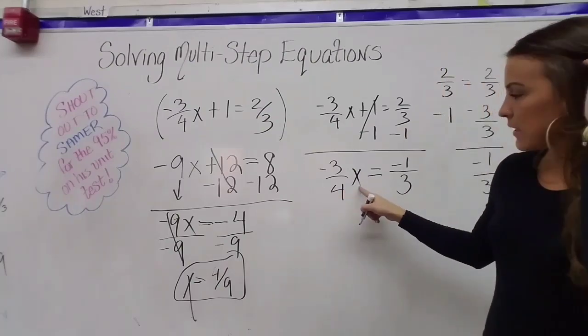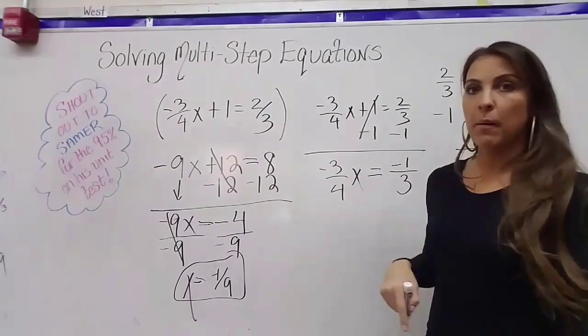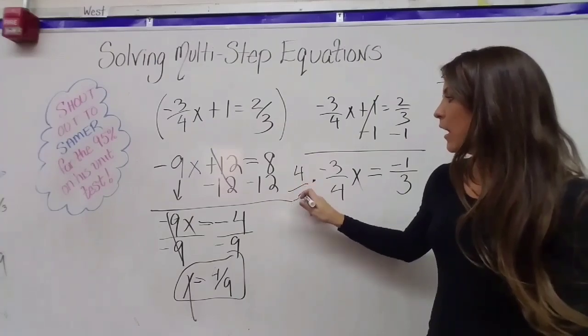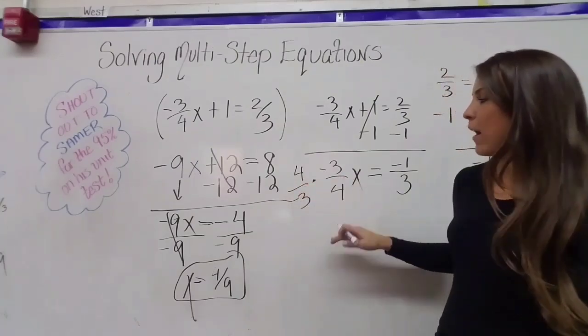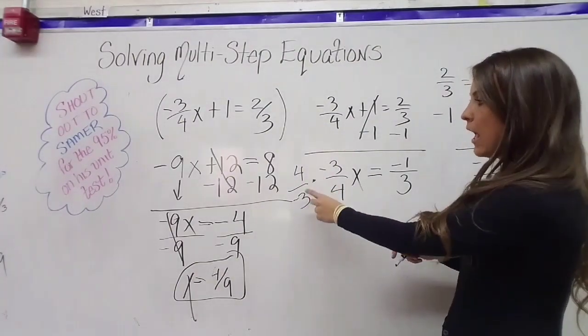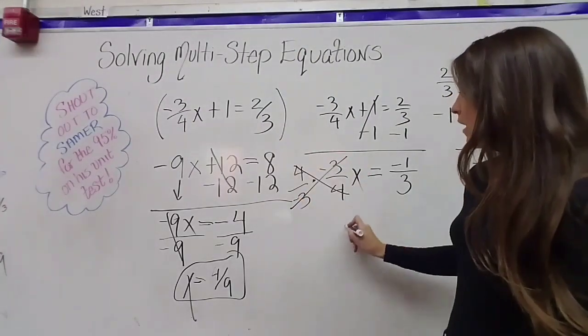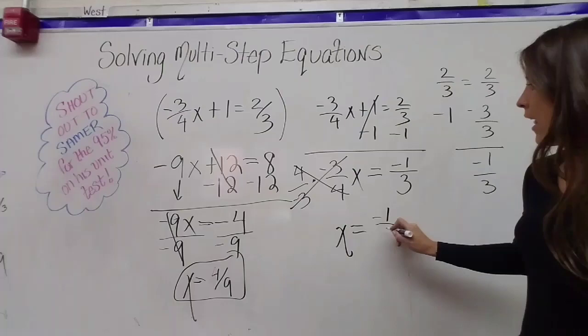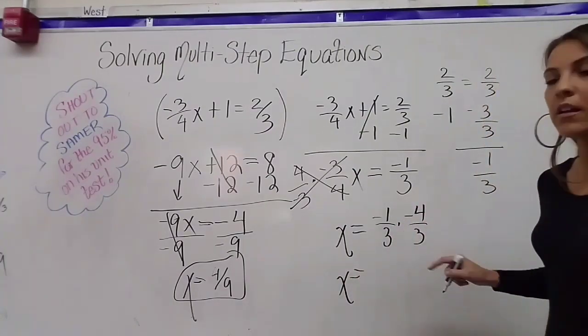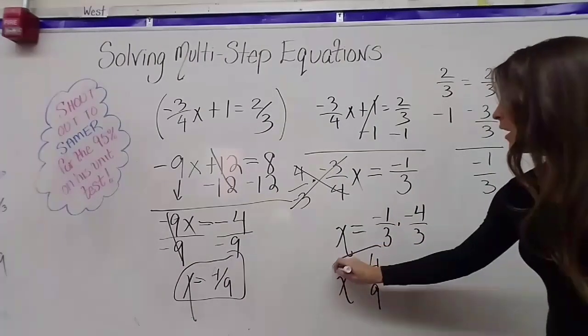So now negative three-fourths is being multiplied by x. So I'm dividing by negative three-fourths. But if you watched my prior video with fractions, I told you that it's the same as just multiplying by the reciprocal. So dividing by a fraction or by a number is the same as multiplying by that number's reciprocal. So if I multiply by negative four-thirds, I'll get one because these all cancel out. I get x equals, and on this side, I'm also going to multiply by negative four-thirds.